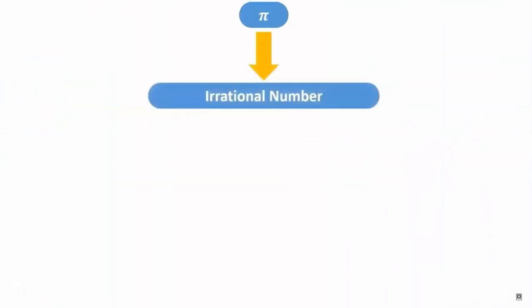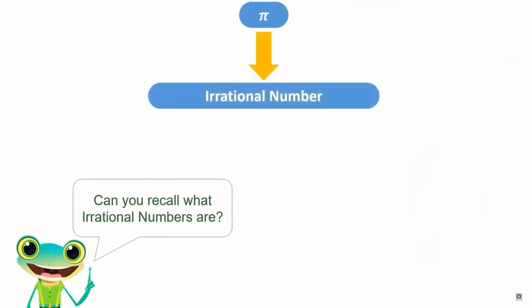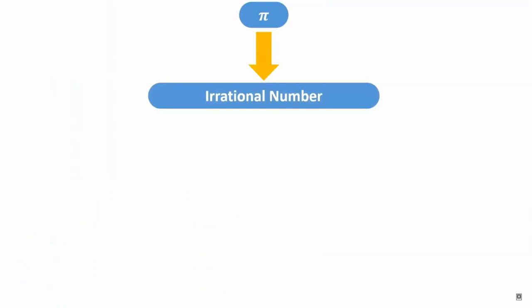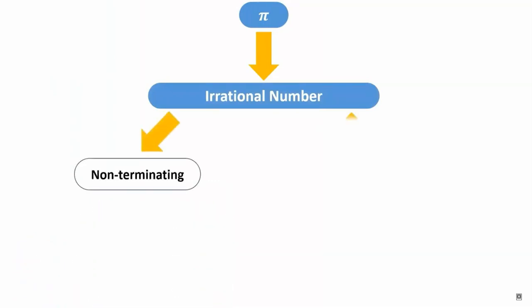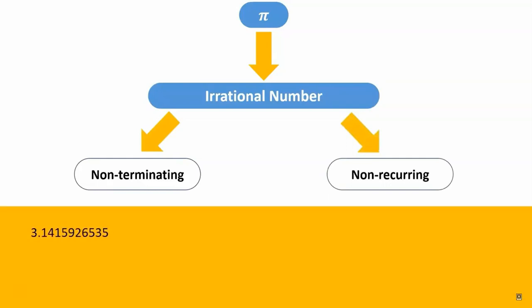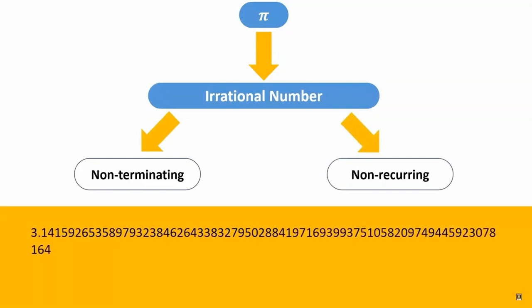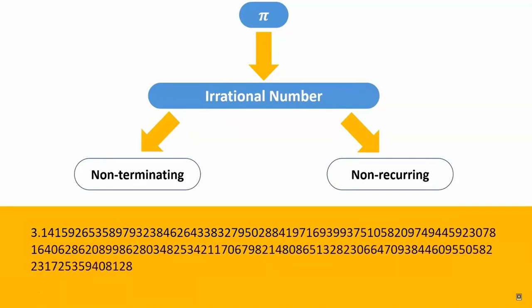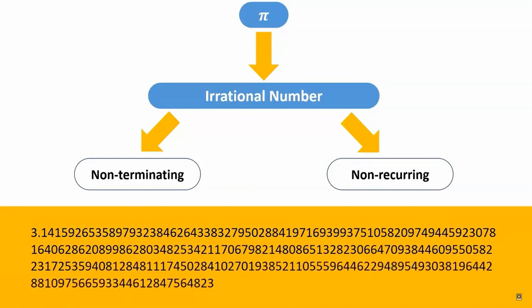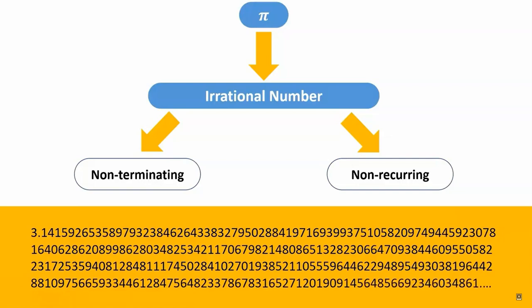Remember that pi is an irrational number. This means that it is a non-terminating and non-recurring decimal number. The digits after the decimal keep going on and on. That is why it is non-terminating. And since there is no repeating pattern in the sequence of digits, it is also non-recurring.